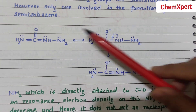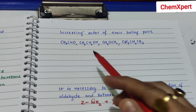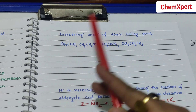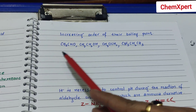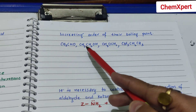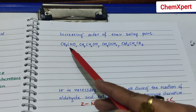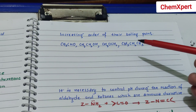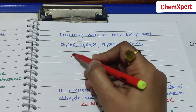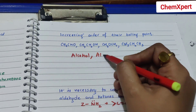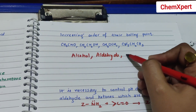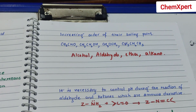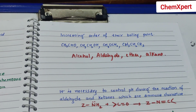You must draw the resonating diagram to explain this. The next question asks to arrange compounds in increasing order of boiling point. Boiling point depends on hydrogen bonding. Alcohol has the strongest hydrogen bonding, so it has the highest boiling point. Then comes aldehyde with dipole-dipole interactions, then ether, and alkane has the lowest boiling point because only van der Waals forces of attraction are present.